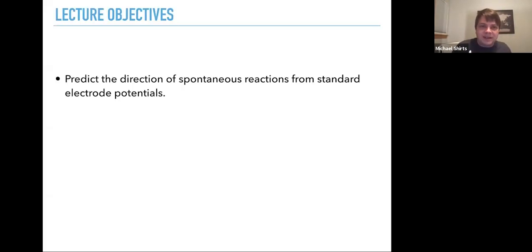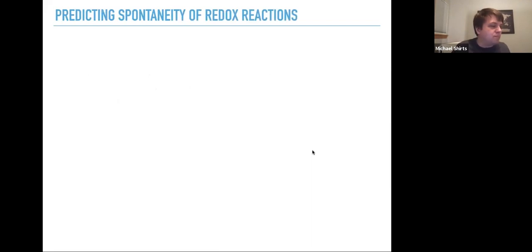In this segment, we're going to continue to talk about electrochemistry and what we're going to be doing is taking that information about standard potentials, standard reduction potentials, and using it to predict the direction of spontaneous reactions from standard electrode potentials. So predicting the spontaneity of redox reactions.